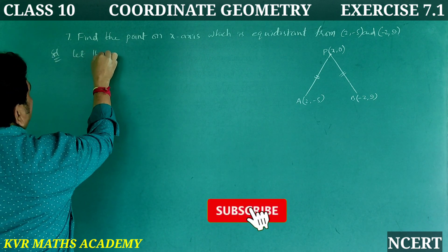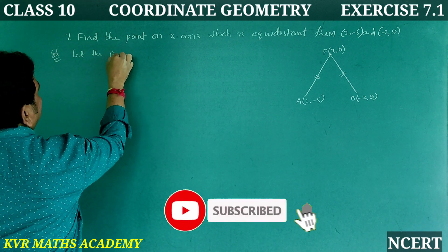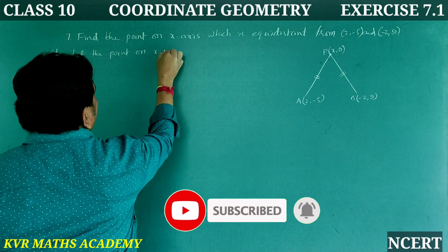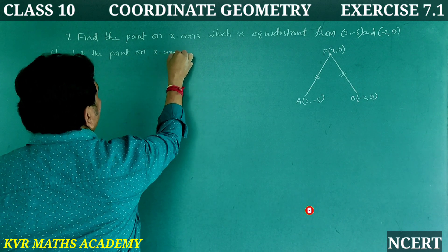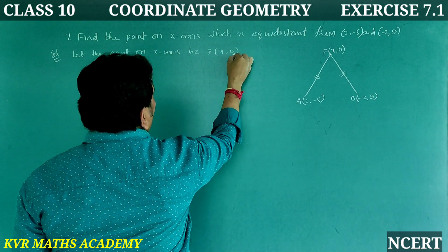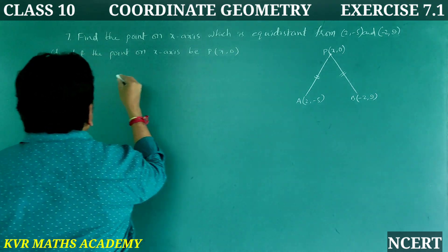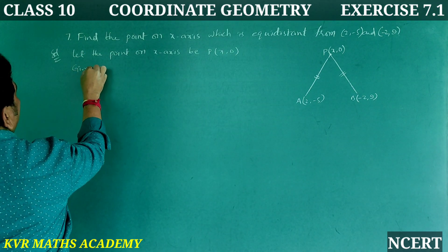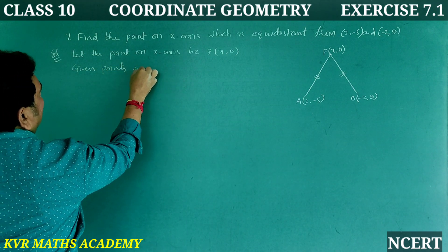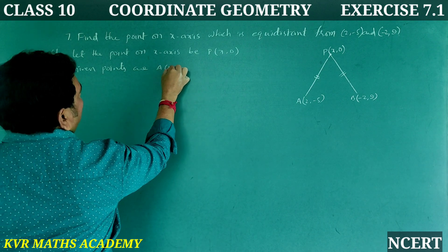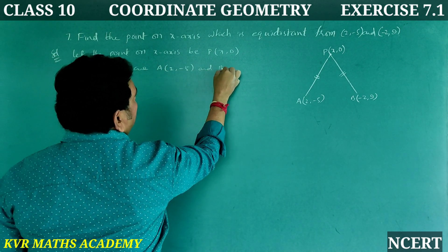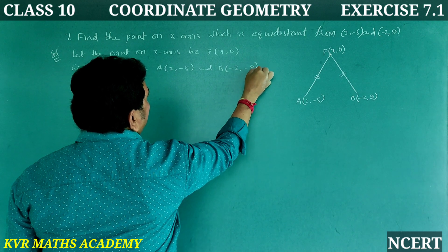Solution: Let the point on the x-axis be P(x, 0). The given points are A(2, −5) and B(−2, −9).